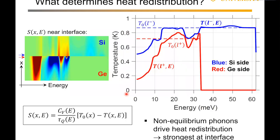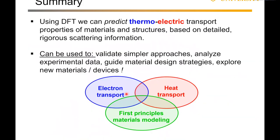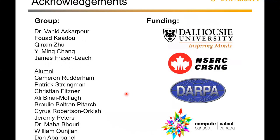To summarize: DFT is a useful tool to predict thermoelectric transport properties, especially using rigorous scattering information. It can be used to validate simpler approaches, analyze experimental data, and guide material design strategies — and perhaps most excitingly, to explore new materials. I'll end by acknowledging the people in my group doing the hard work as well as the funding that made this possible. Thank you.